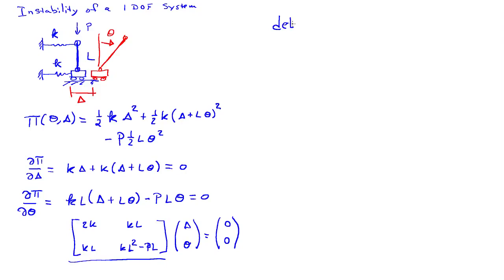So the determinant of that matrix is going to be equal to 2K, K L squared minus P L minus K L quantity squared. And I want to set that equal to zero for any non-trivial solution. So this is a linear equation in P, which I can solve, and so this tells me that P is equal to K L over 2. So this turns out to be, that's my critical load.